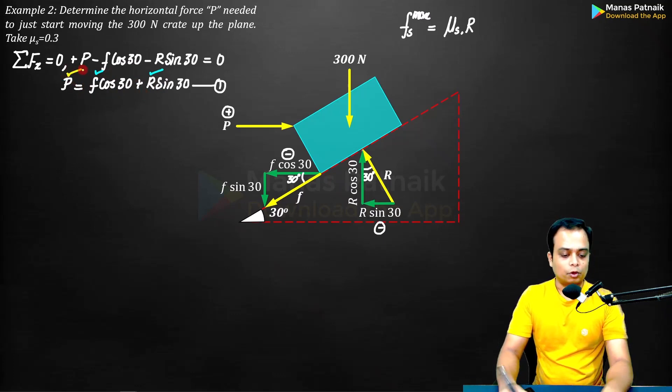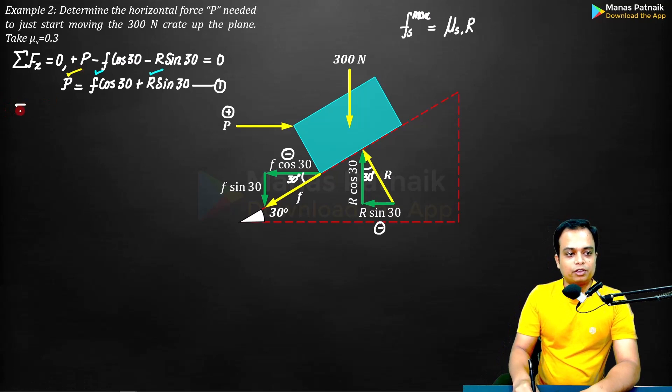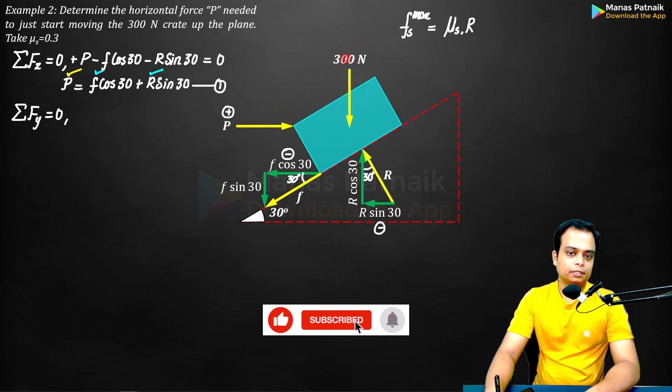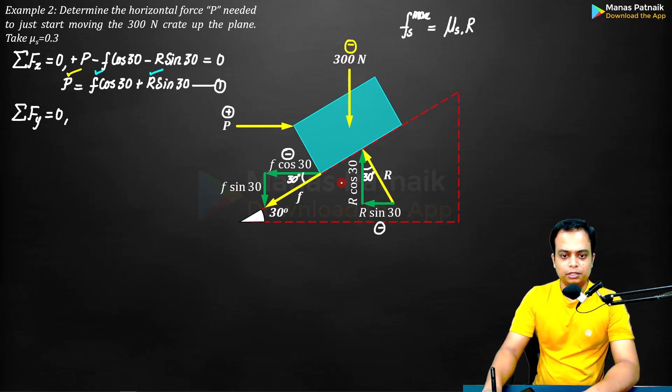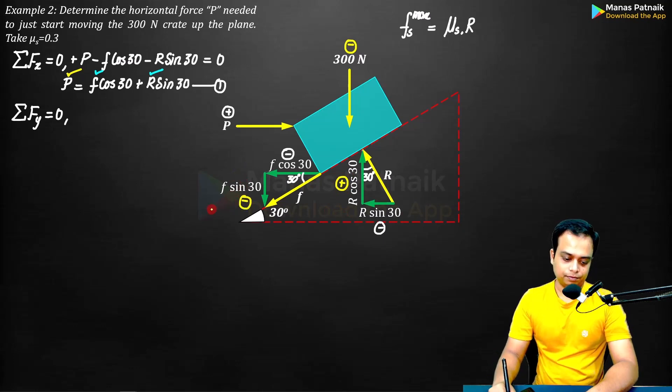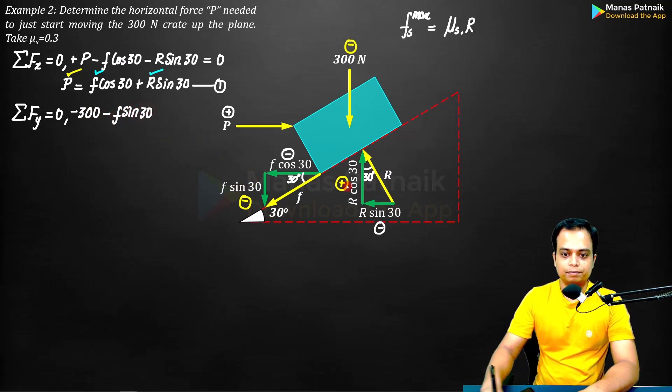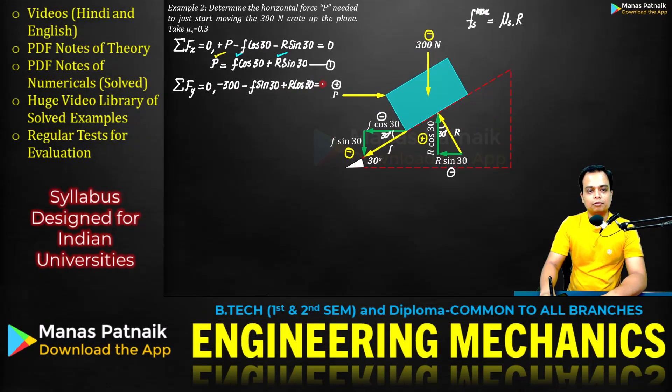Once we achieve the values of R and f we can put it over here to get the value of P. Second equation of equilibrium, let's apply it: summation of all the forces in y direction equal to zero. Let's start with this 300 Newton, so minus 300 minus f sin 30 plus R cos 30 plus R cos 30. For the equilibrium case it is equal to zero. And can you calculate the value of R from this equation? You sure you can.